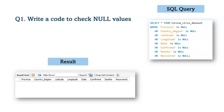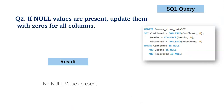First of all, we have to check the null values present in the dataset. After running the query, based on the analysis, it is evident that there are no null values within the dataset. However, if null values are present, we would update them with zero for all columns using the mentioned query.